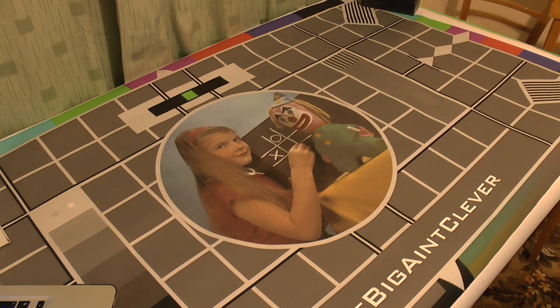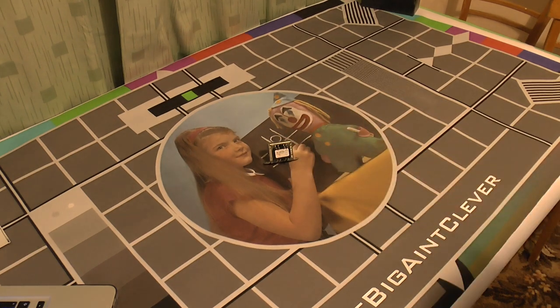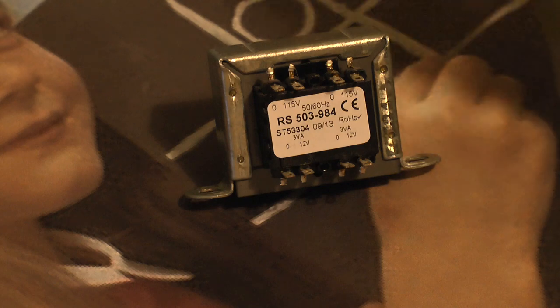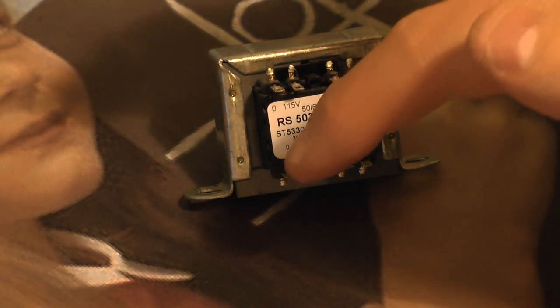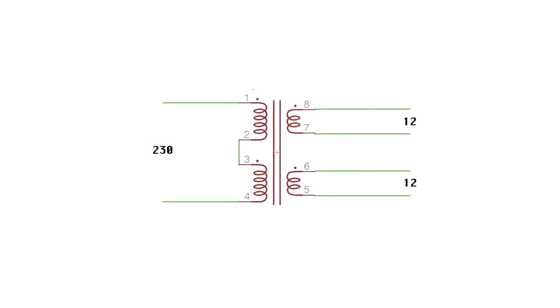The subject this time is transformers, and no I don't mean robots in disguise. What we've got here is a small mains transformer with dual 115 volt primary windings and dual 12 volt secondary windings. As you can see there are lots of ways in which this can be connected to a 230 volt supply, providing us with two independent 12 volt supplies, two opposing 12 volt supplies, a single 12 volt supply, or a single 24 volt supply.